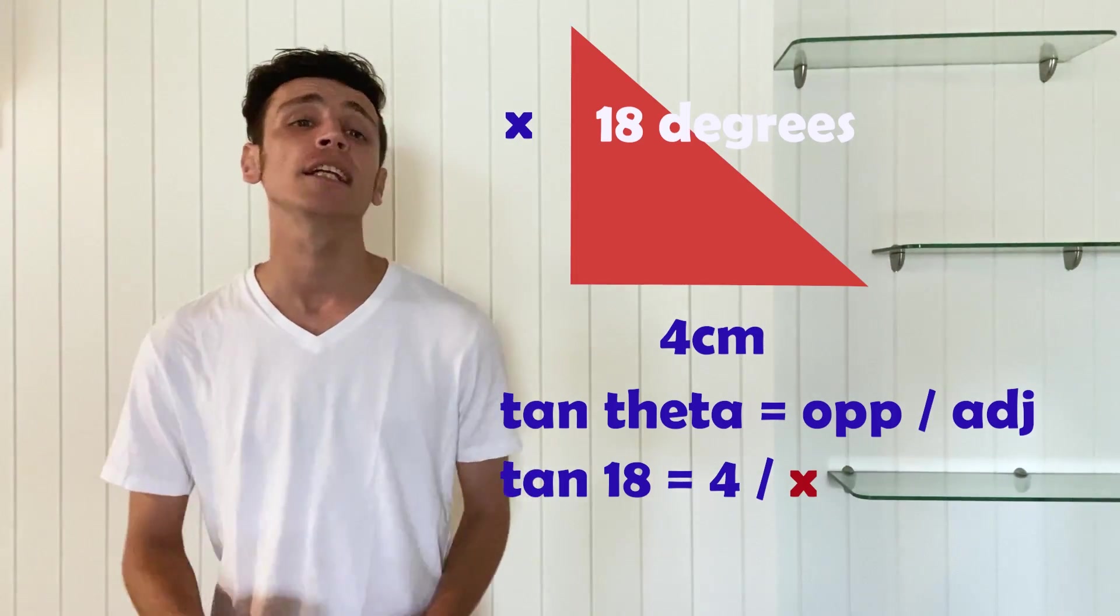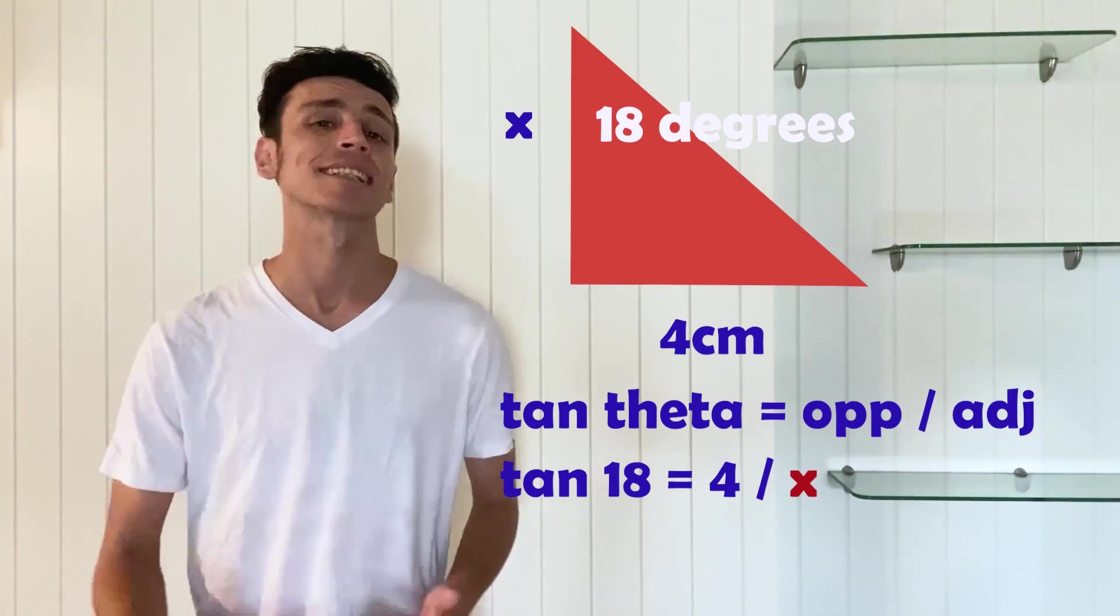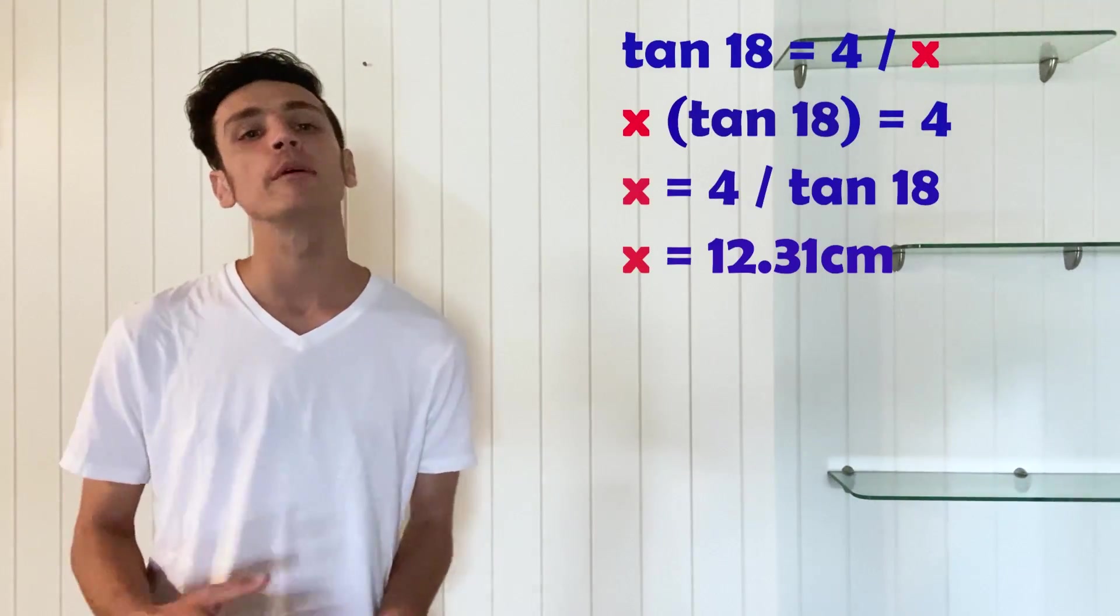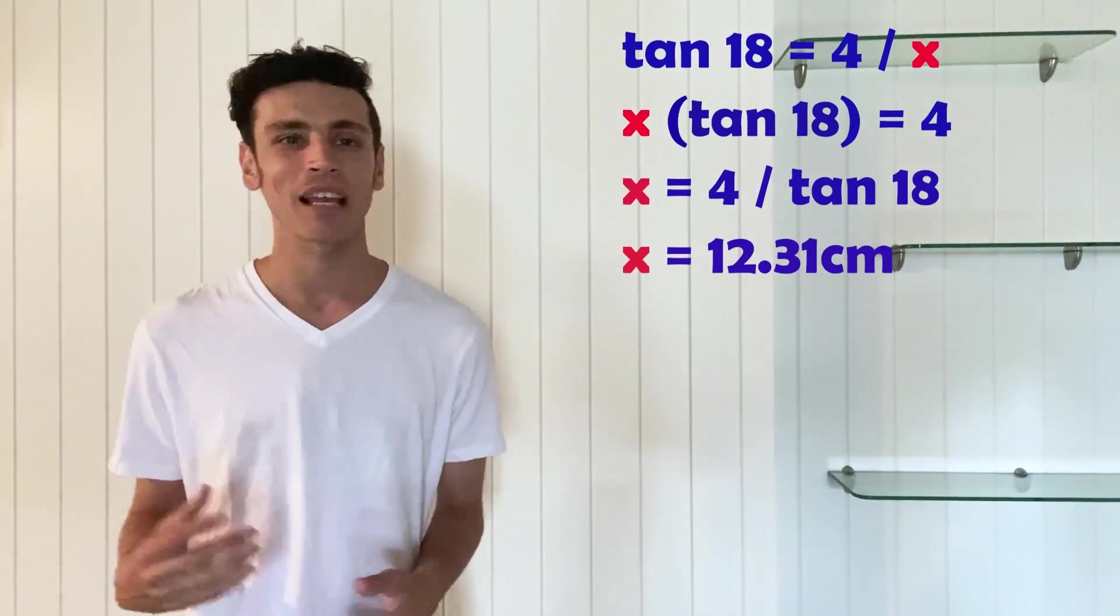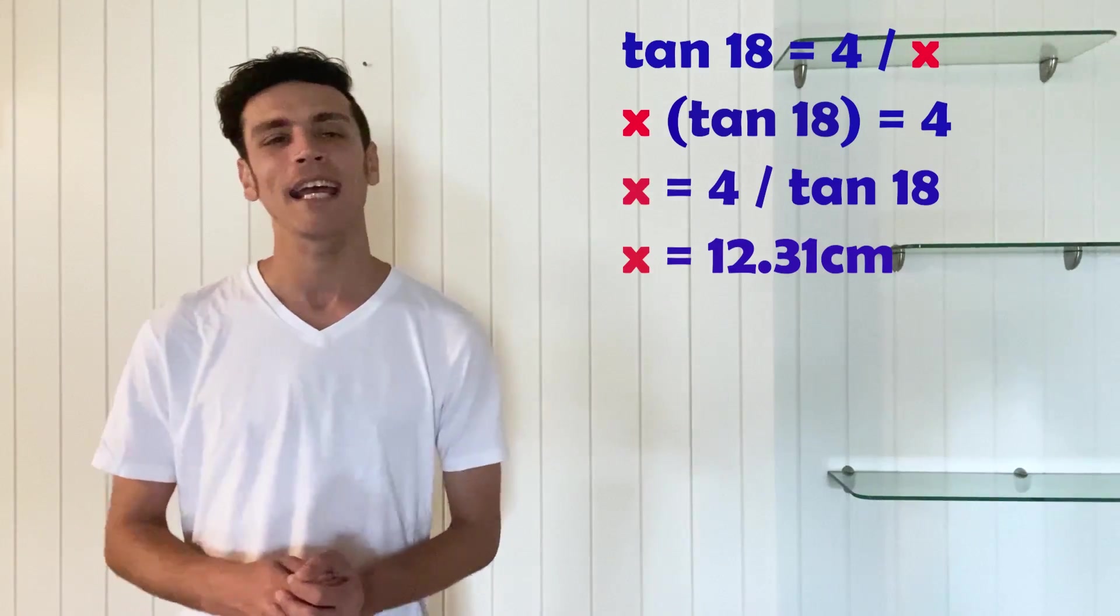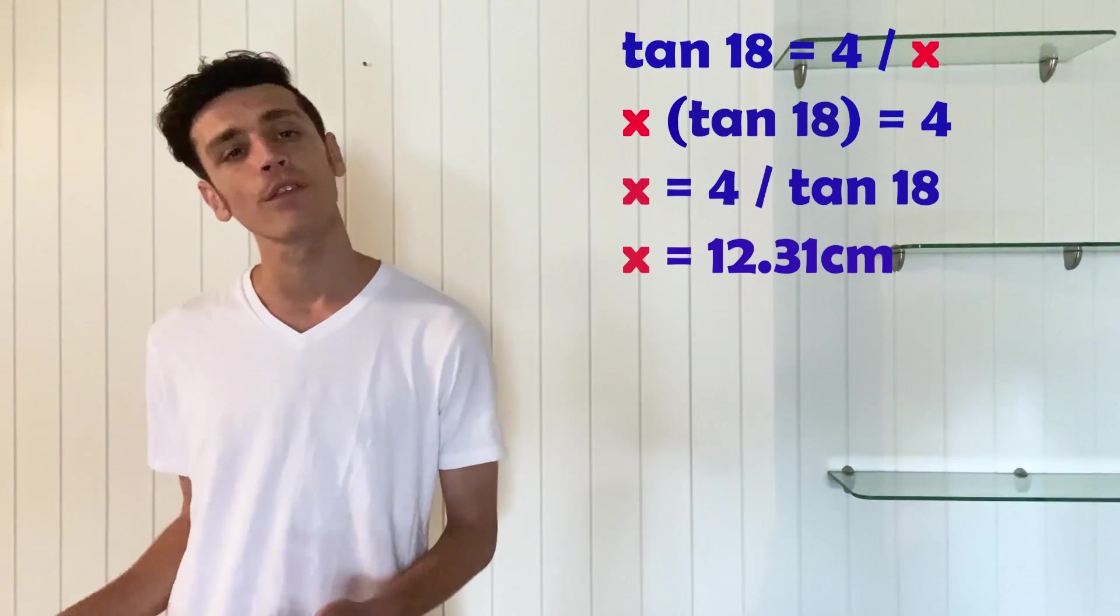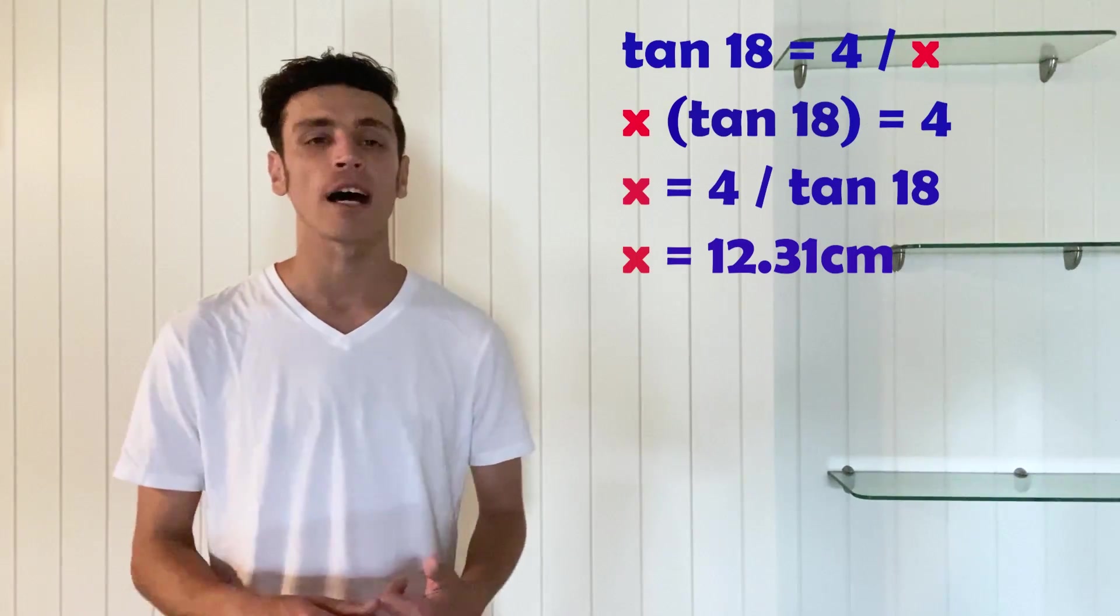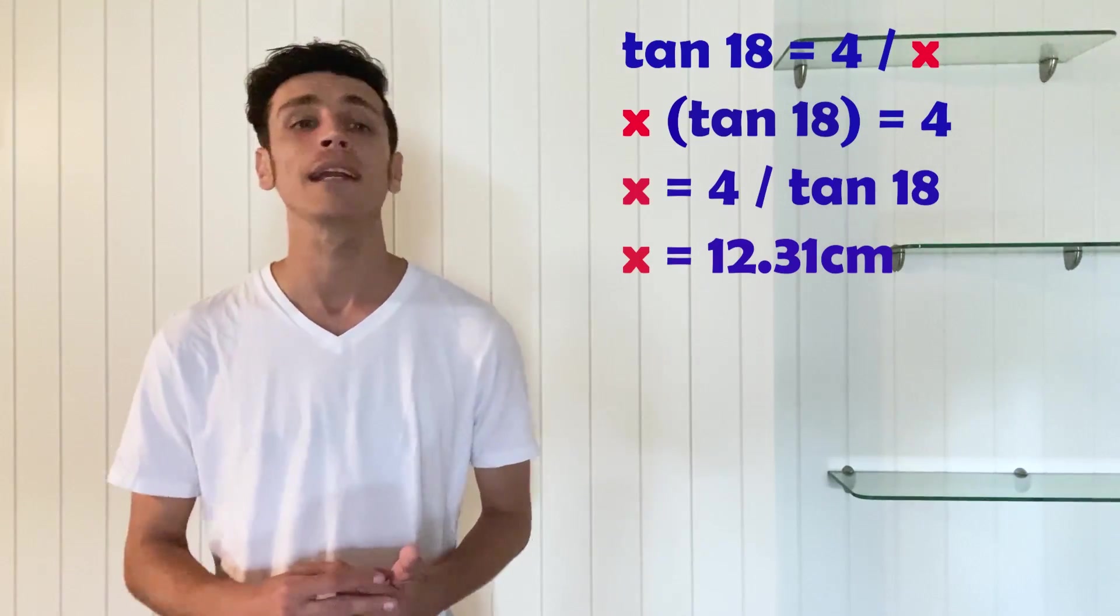So what we do now is, and hopefully you're still with me, is we use this formula to work it out. So what we're going to have to do is rearrange our formula so that the x, or the height in this case, is on its own because that's the one that we're trying to work out. So we've got tan 18 equals 4 divided by x. So what we do is we rearrange, so firstly we have to get rid of this fraction, so we're going to have to take the x from one side of the equation and move it to the other side of the equation. And in algebra if you take something from one side to the other it does the opposite. So it's dividing by x on this side, so it's going to multiply by x on the other side. So that's going to give you x multiplied by tan 18 equals 4. And now we do the exact same process to get rid of the tan 18 onto the other side, so it's multiplying on this side so on the other side it's going to divide. So that's going to give us x equals 4 divided by tan 18, and then when you plug this into your calculator it's going to give you an answer of roughly 12.31 centimeters.